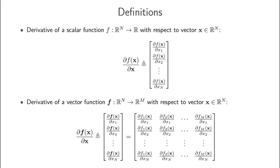The first definition is the derivative of a scalar function — a function that takes in a vector x of dimensionality n and outputs one single real value. The derivative of such a function with respect to the vector x is defined by stacking all of the partial derivatives of this scalar-output function with respect to the different scalar elements in the x vector.